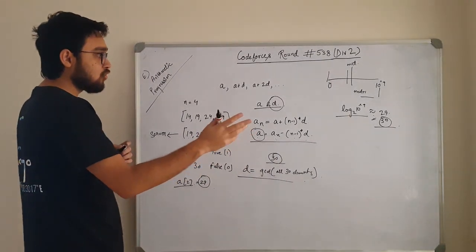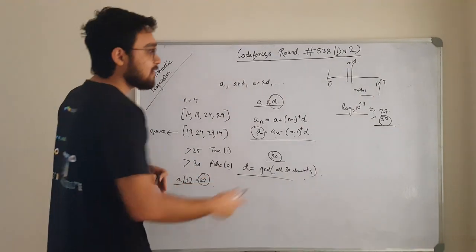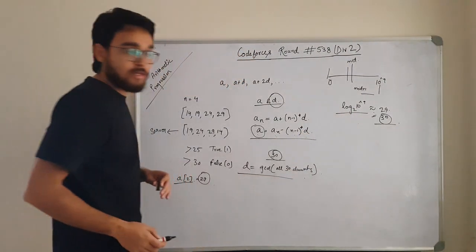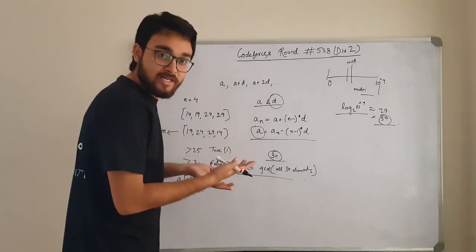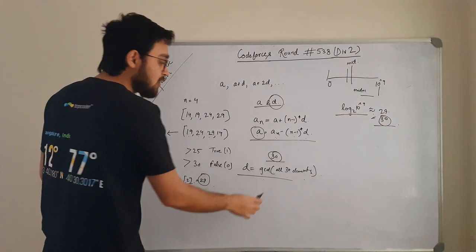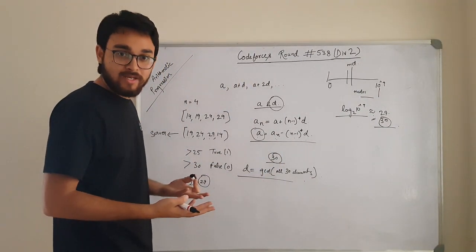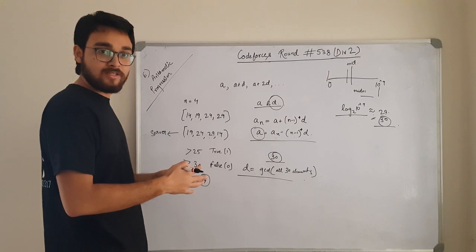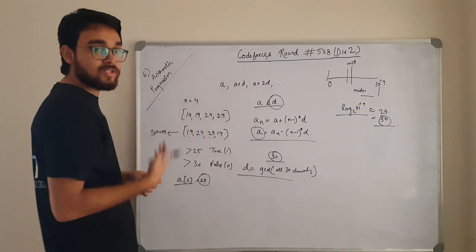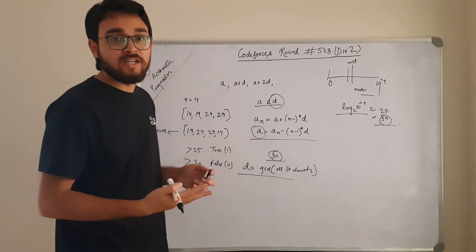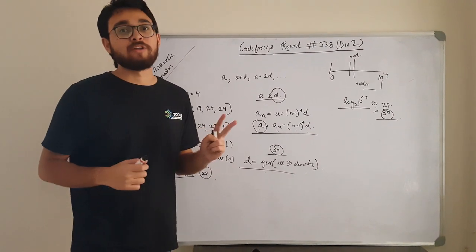So for this question, all you need to do is run a binary search, find the maximum element, and consume at max 30 queries for that, and find the GCD of the remaining 30 queries using the elements from the queries. So this was all for this problem. For implementation details, you can follow the link in the description. Happy coding.